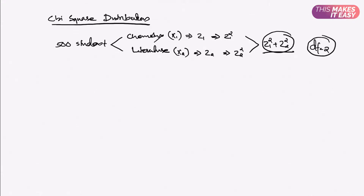This new variable — the sum — has a distribution called chi-square distribution with two degrees of freedom. The degrees of freedom equals the number of standard normal random variables summed together. Here we added two, so we have two degrees of freedom. If we add n standard normal random variables, we have n degrees of freedom. We can then ask: what is the probability that this sum is greater than six, or less than five? Such questions are answered using chi-square distribution. Now I will derive the density of the chi-square distribution.